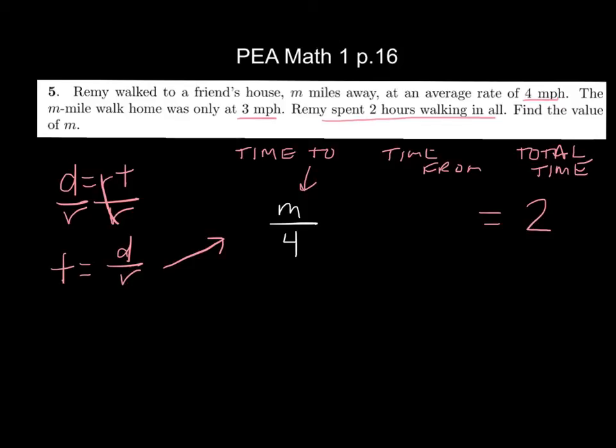Now coming back from the friend's house, I'm going to add to it the distance back, which is still m, and the rate, which is 3. And there's my equation I can use.